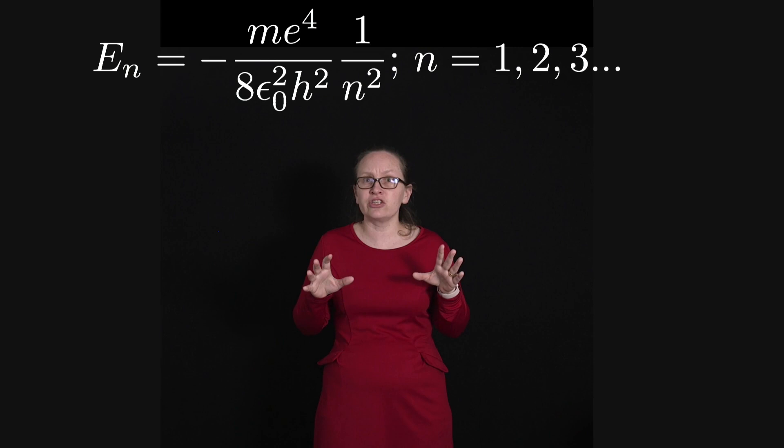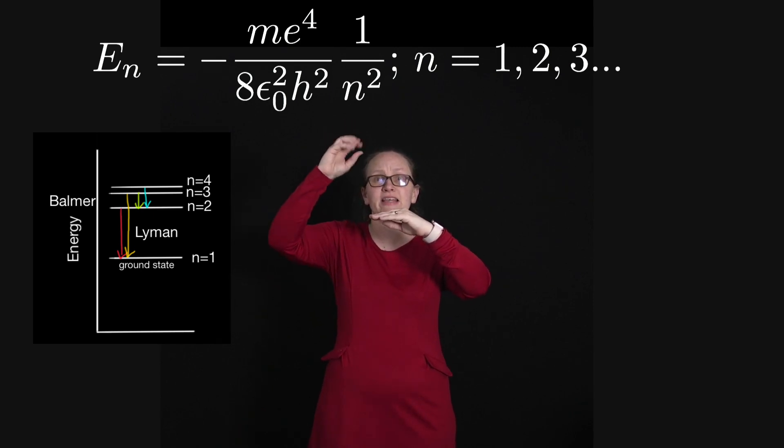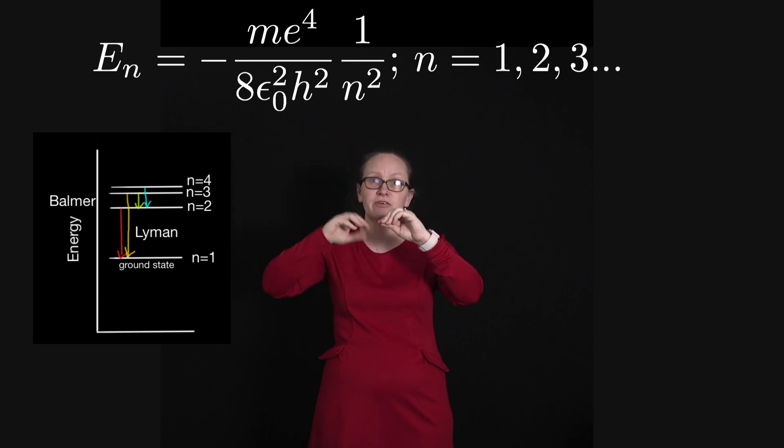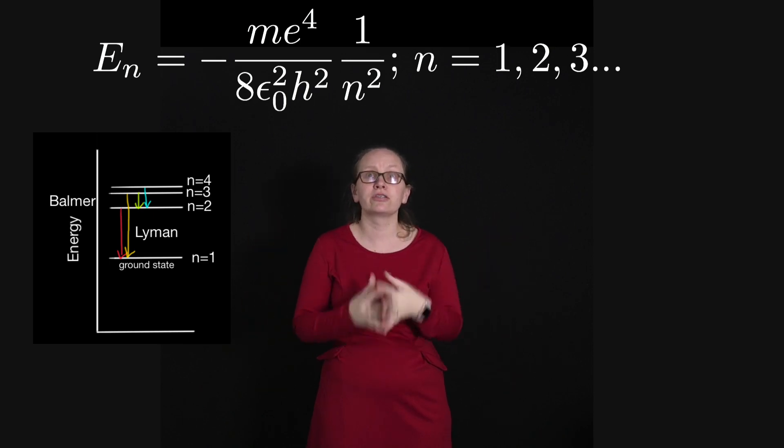Now because these energy levels are the same as what we found in the Bohr model, what we were looking at before for the transitions inside the hydrogen atom where we could have electrons transitioning from excited states down to the ground state in the Lyman series, or from excited states down to the n equals 2, the first excited level, in the Balmer series, this is all still true because the energy differences are exactly the same.